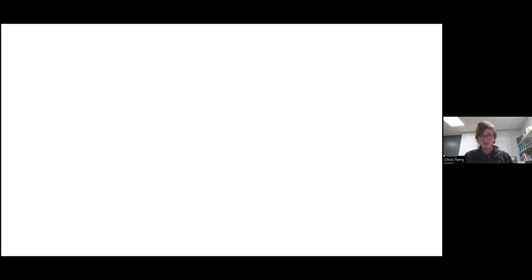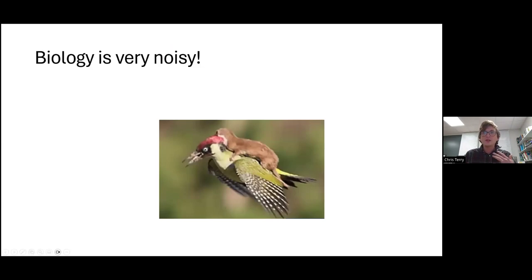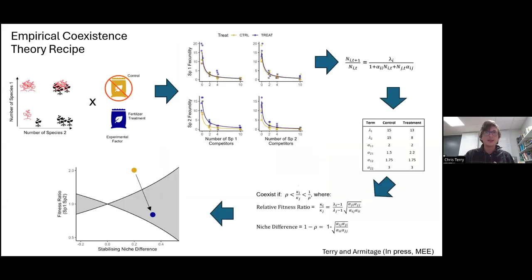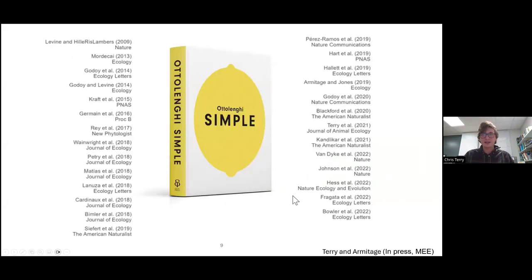But the core problem we have is really just how noisy biology is. We all kind of know this, but we close our eyes to it quite often. Particularly within modern coexistence theory studies, where the focus is on predicting outcomes, it's actually amazingly rare to get the raw data plotted out. And if it is, it's deeply buried in SI. We frequently get orders of magnitude of variation between the observations that go into this recipe.